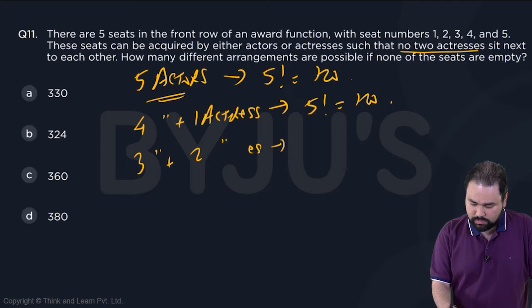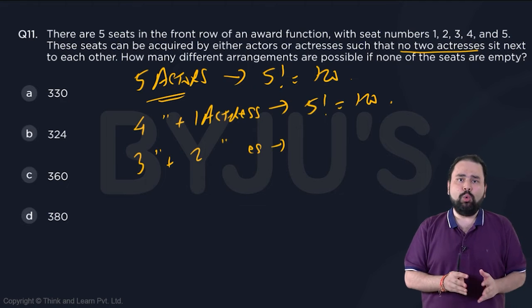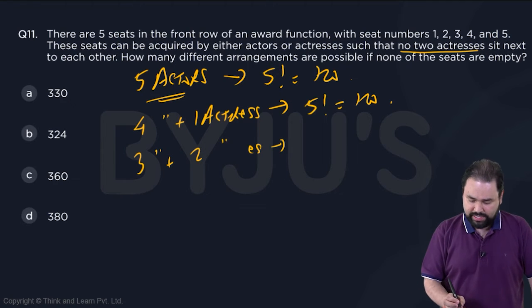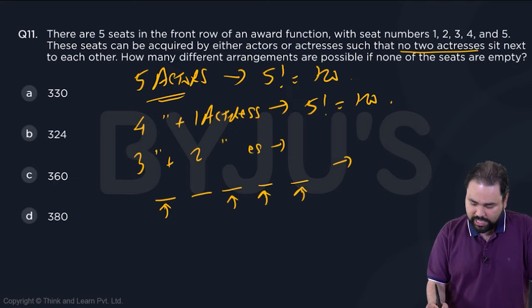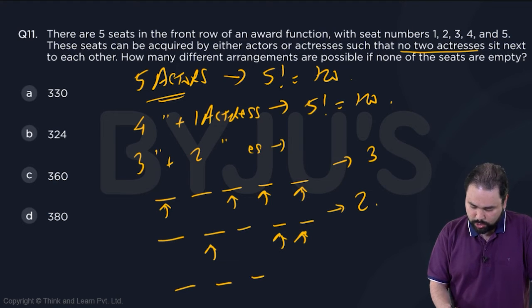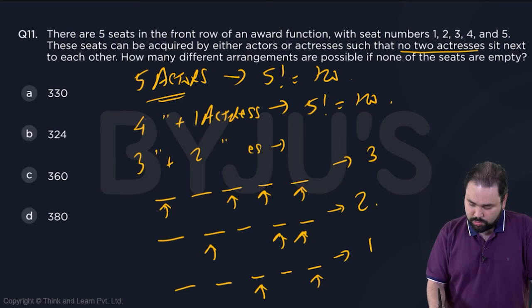Next is three actors plus two actresses. Now when there are two actresses, look at the positions they can be at. Say one, two, three, four, five. If the first actress is here, the second can be here, here, or here—that means three cases. Then if the first actress is at position two, the second can be here or here—two cases. Then if the first actress is at position three, the second can be here—one case.